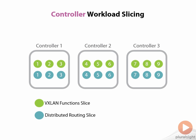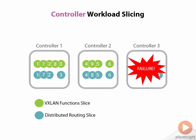In this example, green dots represent VXLAN functions and blue dots represent distributed routing slices across three controllers. When controller three fails, slices are automatically redistributed to the remaining two controllers. You may lose some performance but no capability. Importantly, the data is mirrored — controllers one and two already had copies of controller three's tables, so nothing needs to be rebuilt after the failure.